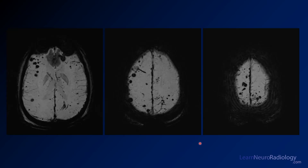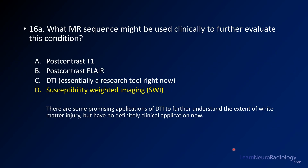If you do susceptibility-weighted imaging, what you see is the extent of injury is significantly larger than you're able to see on those other modalities — much greater than what you see on CT. You see at nearly every subcortical location a lot of these areas of susceptibility. Those are areas of microhemorrhage and tissue injury where there are small amounts of blood products. Susceptibility shows you those additional areas of hemorrhage.